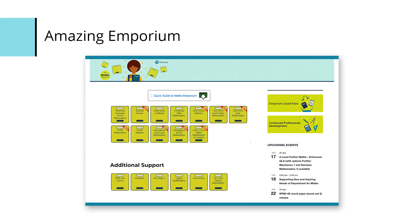We'll start with Pearson's Emporium. Search 'Maths Emporium' on Google — you'll need a login, but you can request one yourself without going through your school. It is our go-to on a daily basis. Someone commented last week on a support visit that it feels like a minefield, but once you click through to GCSE Mathematics and the key sections we'll cover, it's actually very slick and easy to navigate.